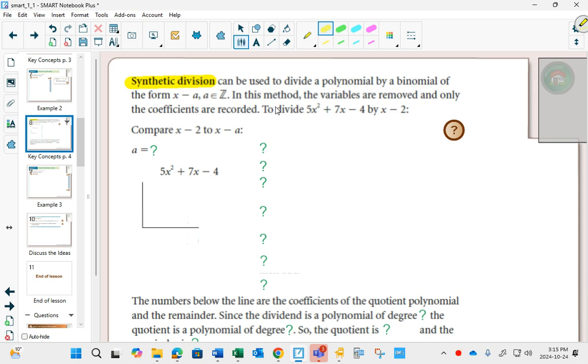So whenever possible can you see yourself wanting to use the synthetic division because it's a lot shorter. So what did we do?